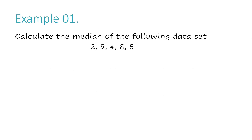Let's take a look at example number one. Calculate the median of the following data set. If you have the numbers 2, 9, 4, 8, and 5, you're first going to start by ordering these numbers in order from least to greatest.